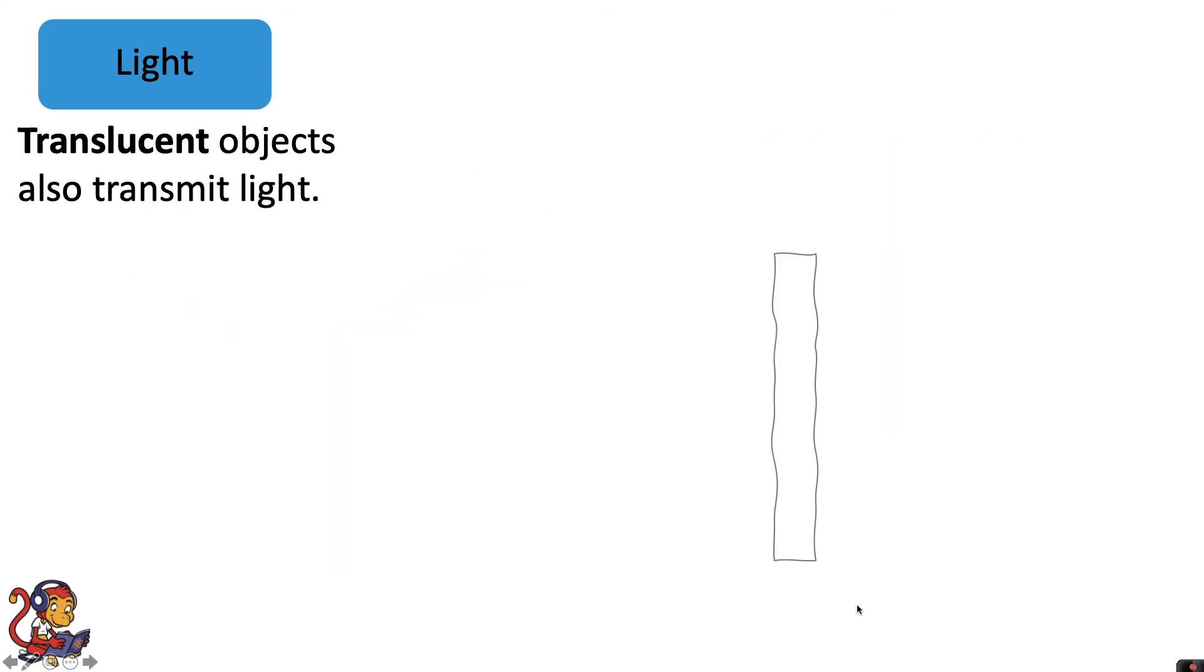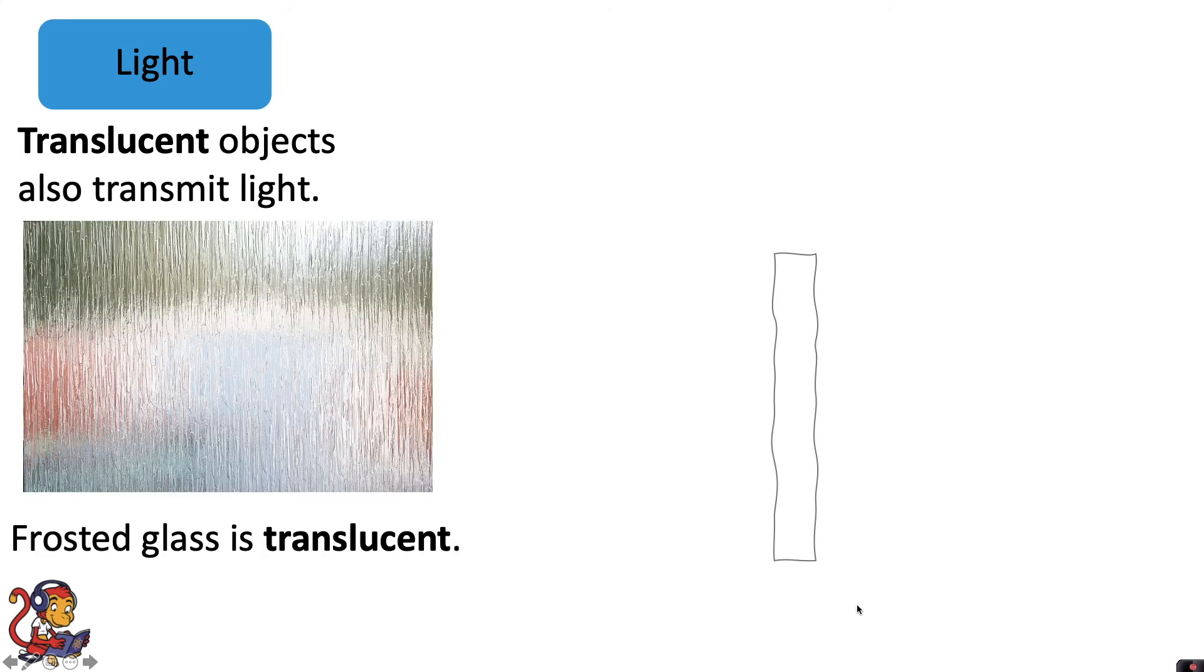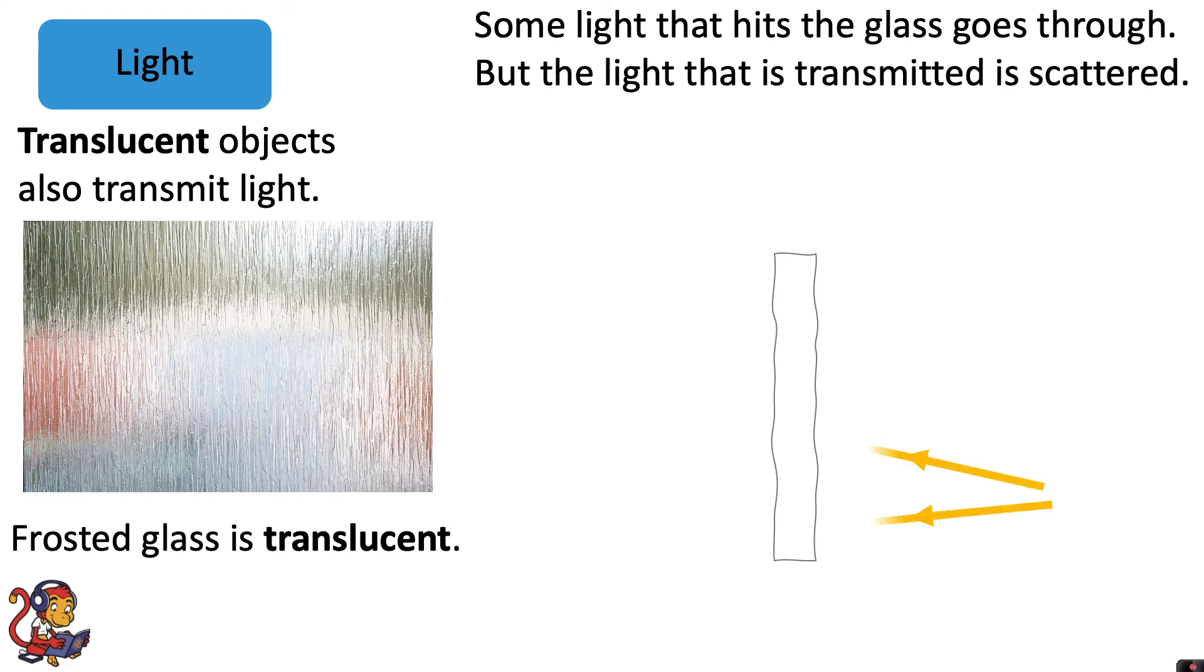Translucent objects also transmit light. Frosted glass is translucent. Some light that hits the glass goes through, but the light that is transmitted is scattered.